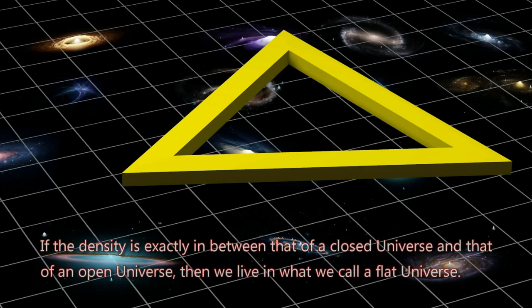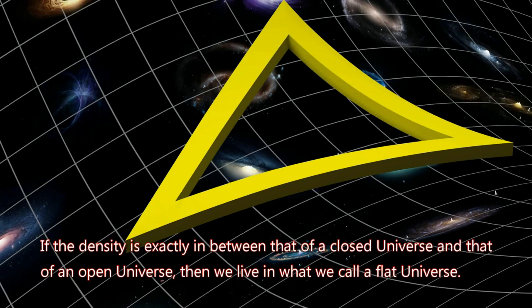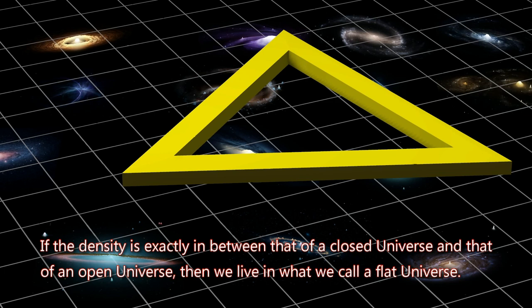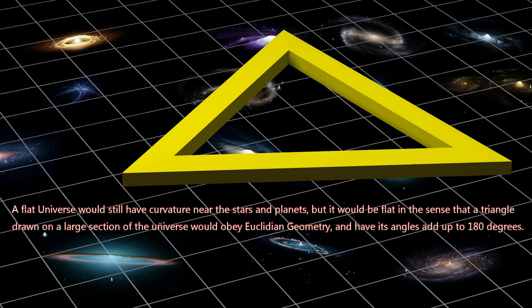If the density is exactly in between that of a closed universe and that of an open universe, then we live in what we call a flat universe. A flat universe would still have curvature near the stars and planets, but it would be flat in the sense that a triangle drawn on a large section of the universe would obey Euclidean geometry, and have its angles add up to 180 degrees.